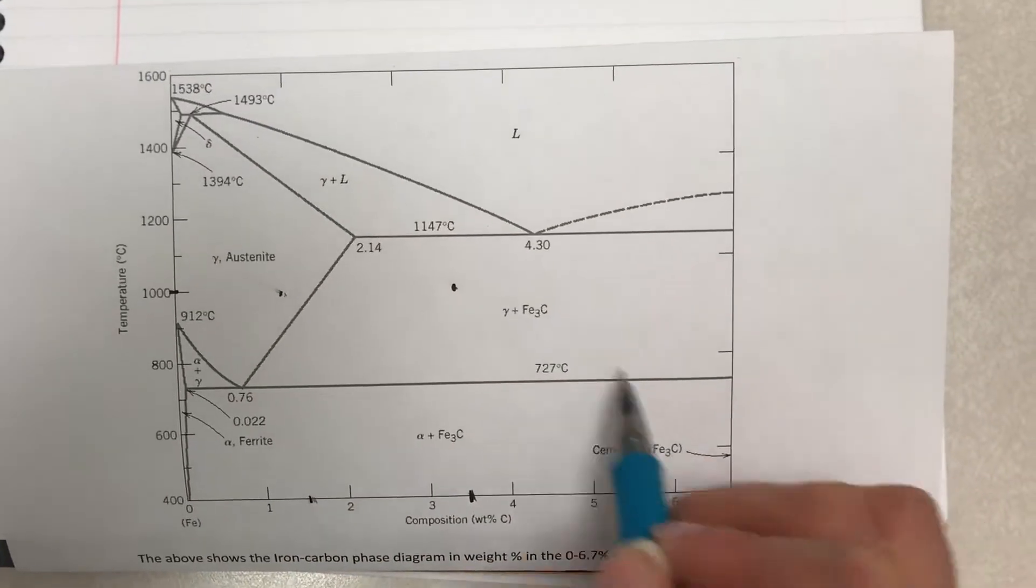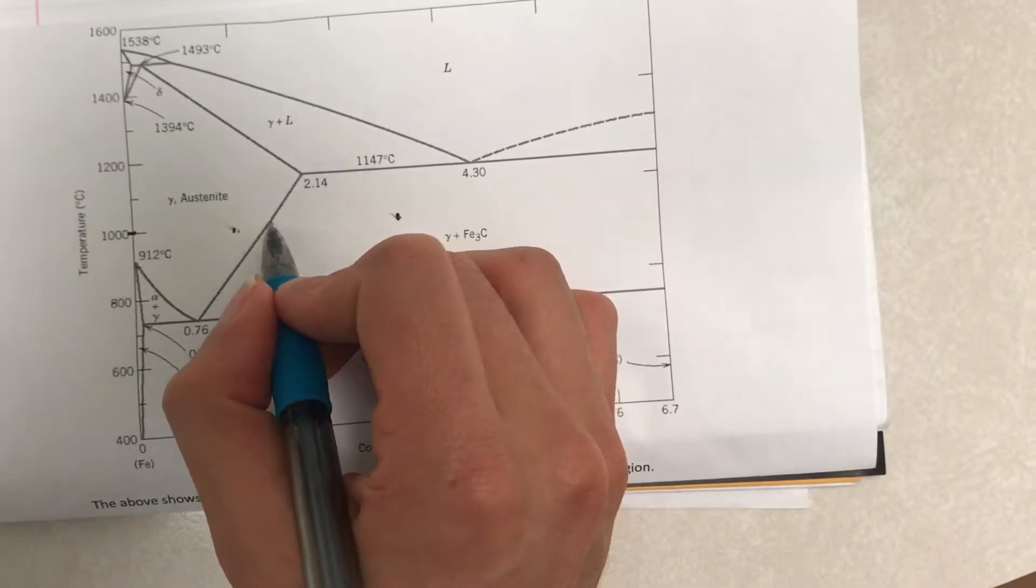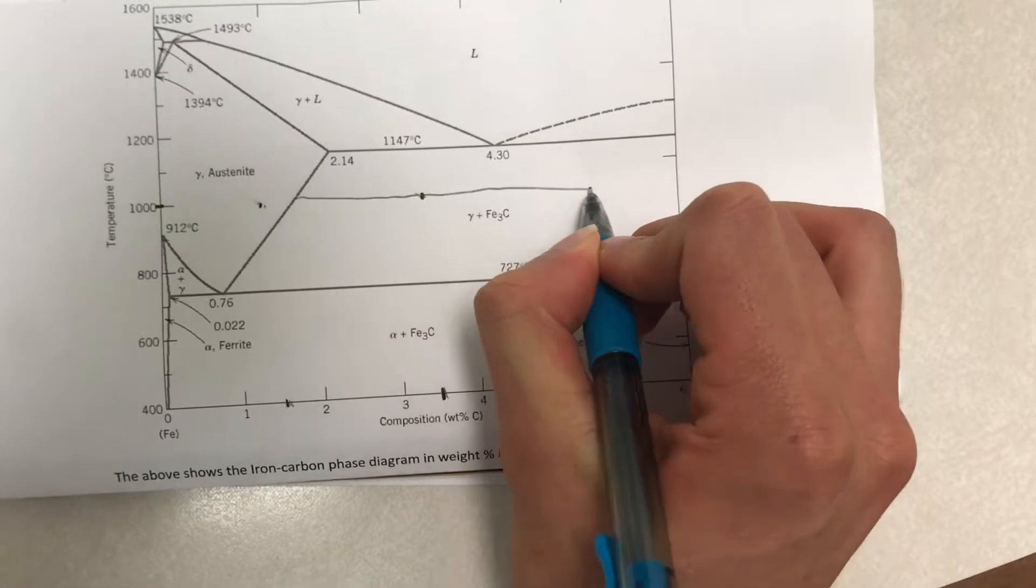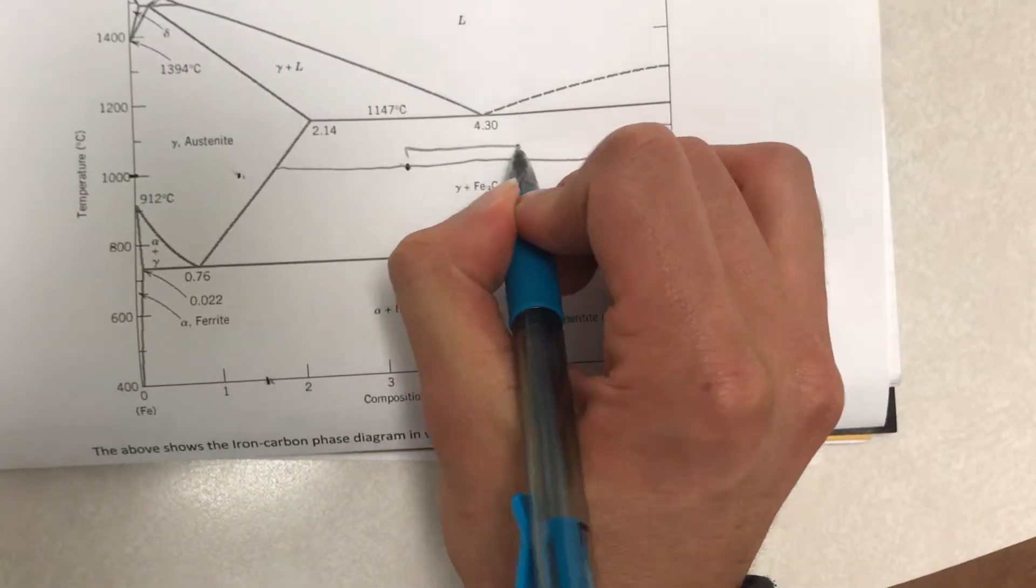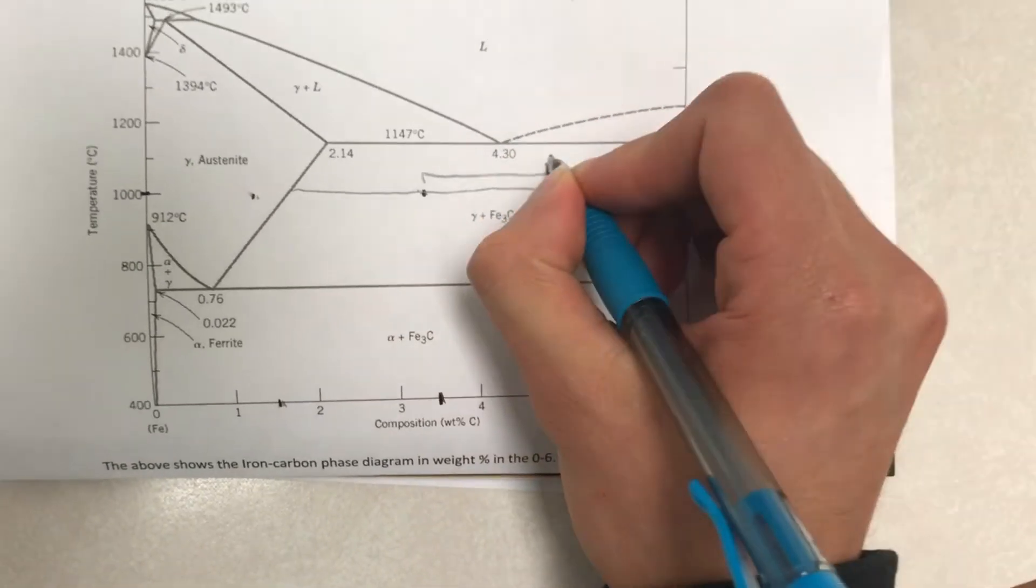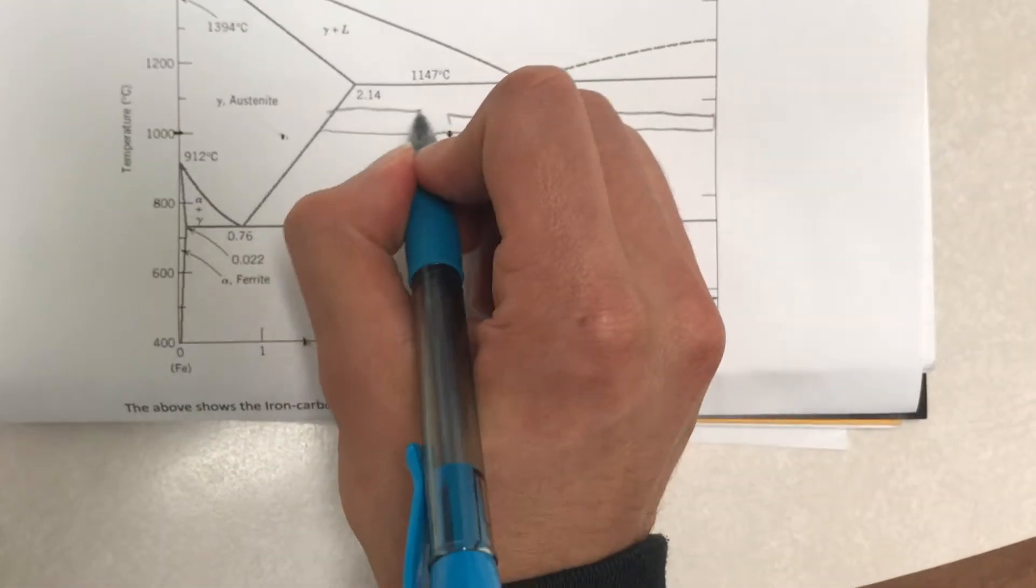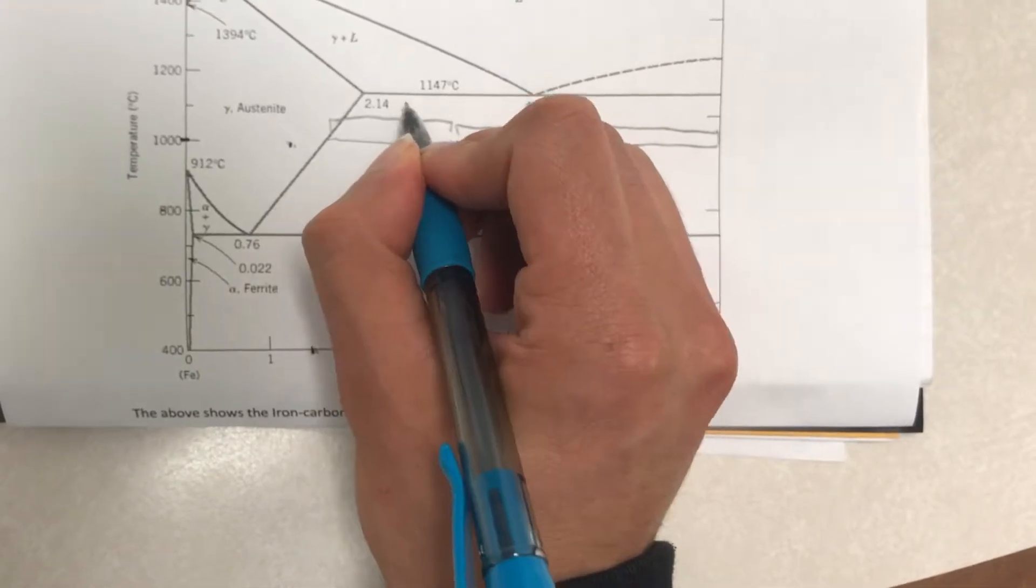So to find the phase fraction of each of those specific phases, first we draw a line like this and we divide the line up into two parts. This part, we'll just label it any variable you want, I'll just name it as y. And this part over here, which I'll just label as x.